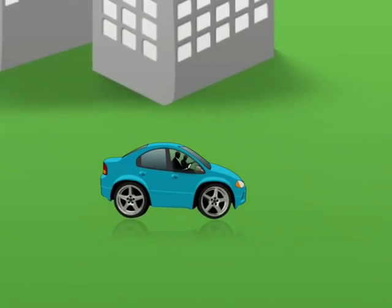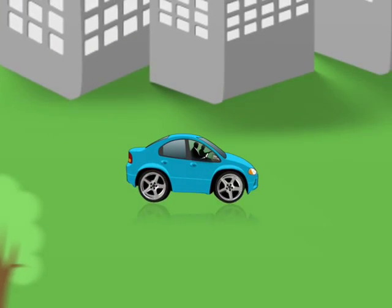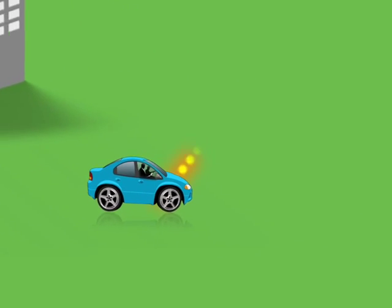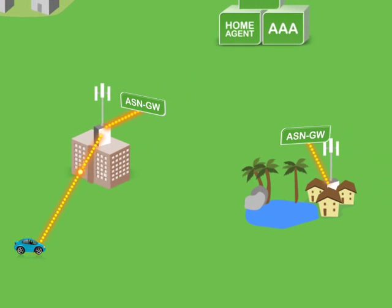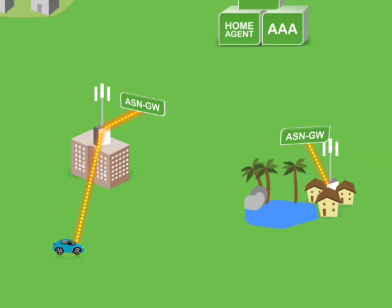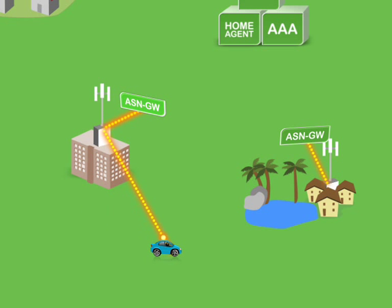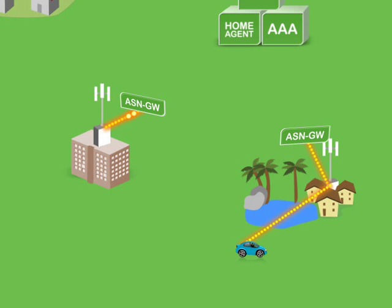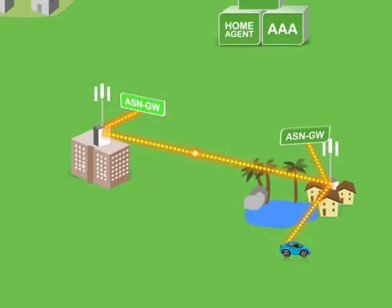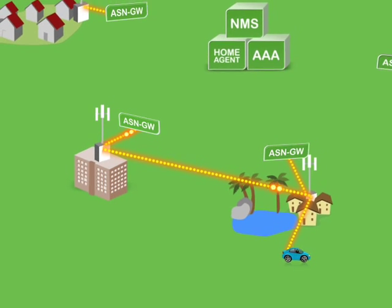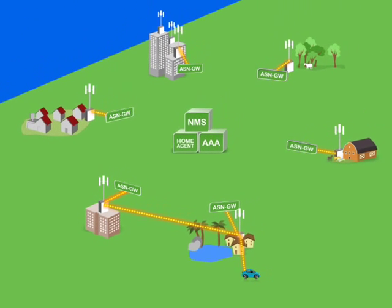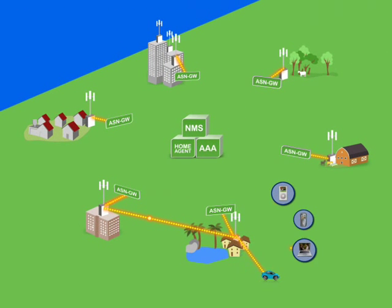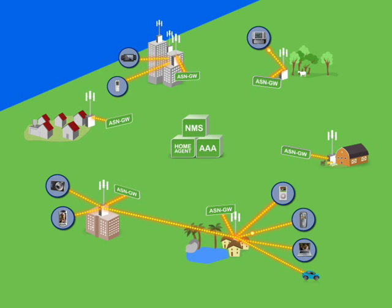Let's look at what happens to a mobile subscriber in his initial entry to a network, in which the service edge is close to the user. The mobile subscriber enters the network and is immediately anchored to a specific ASN gateway. When the subscriber travels, he's handed off to another base station while continuing to be served by the initial ASN gateway. A single base station can serve multiple subscribers through different anchored ASN gateways.